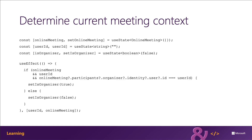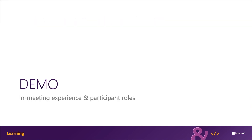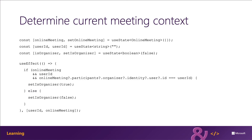I can set that property when two other state properties change: when the user ID changes and when the online meeting changes, I want to check whether the online meeting is set and whether the user ID is set. If they are, I check if the current user ID matches the organizer of the online meeting — there's only going to be one organizer — and if it is, I set the organizer state value to true, otherwise false. My meeting app tab can then use this state property flag to disable controls for attendees who aren't the meeting organizers. We'll see this in our demo in just a moment.